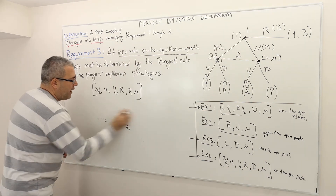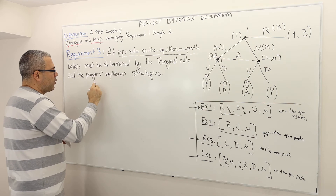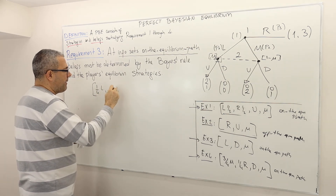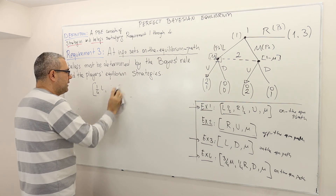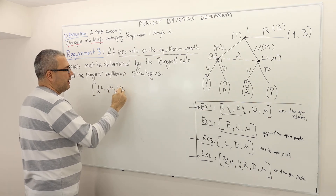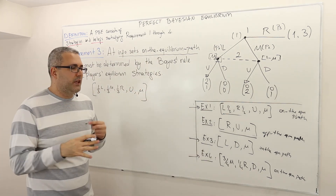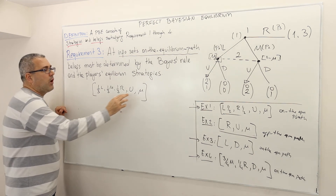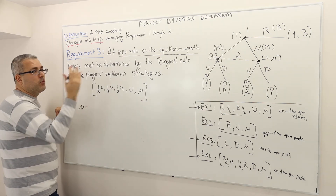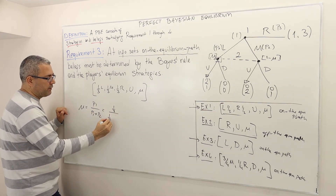Let me give one final example: one-over-three L, one-over-three M, one-over-three R — player one randomizes with equal probabilities. What is the consistent mu satisfying requirement three? Mu equals P1 divided by P1 plus P2, which is one-over-three divided by one-over-three plus one-over-three.